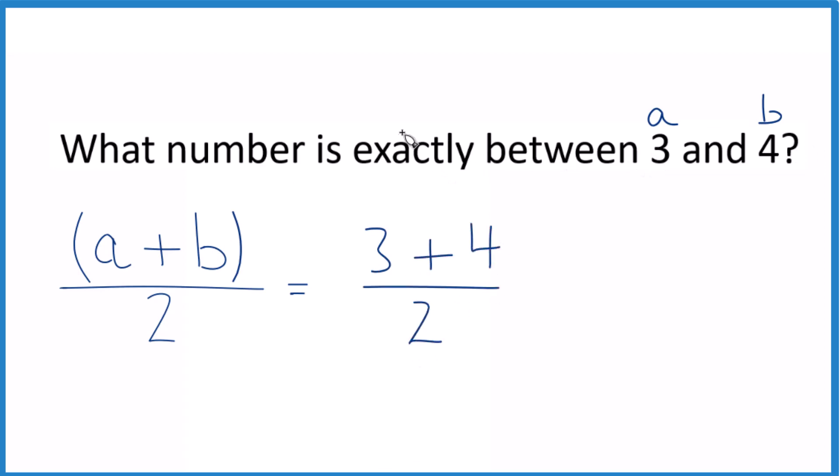That gives us the average, tells us what's exactly between 3 and 4. 3 plus 4 is 7, and then we just bring the 2 across, 7 halves. So that's exactly halfway between 3 and 4.